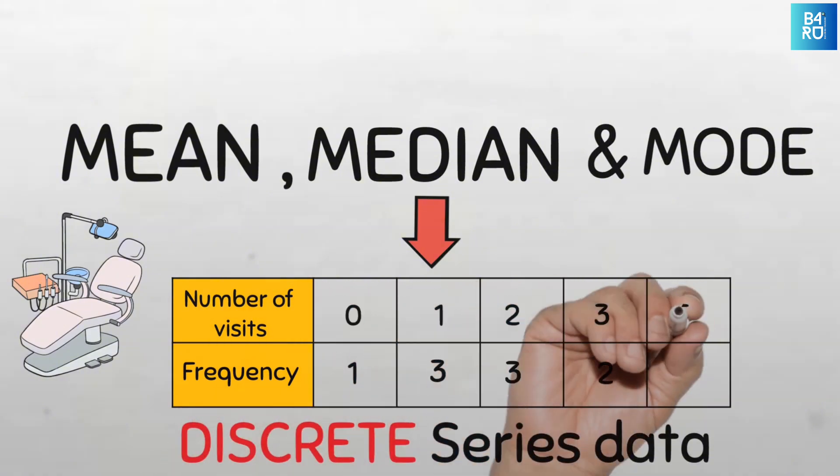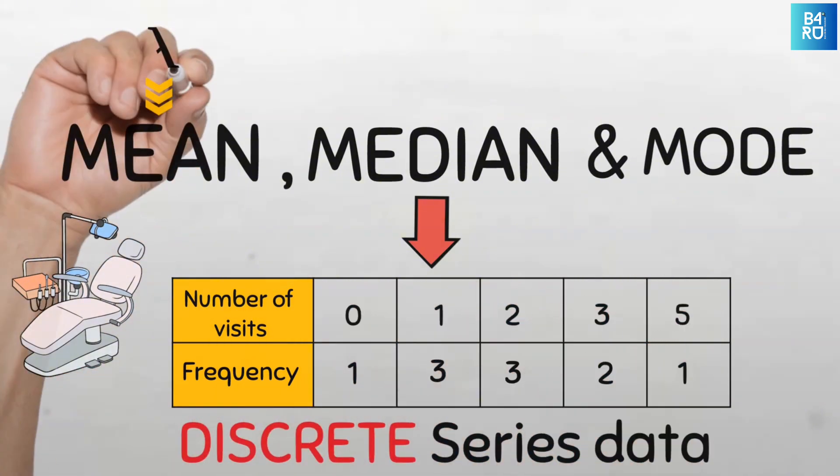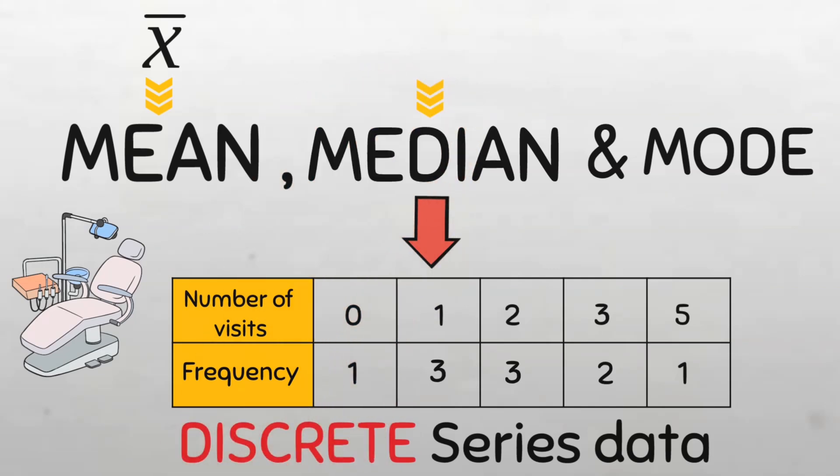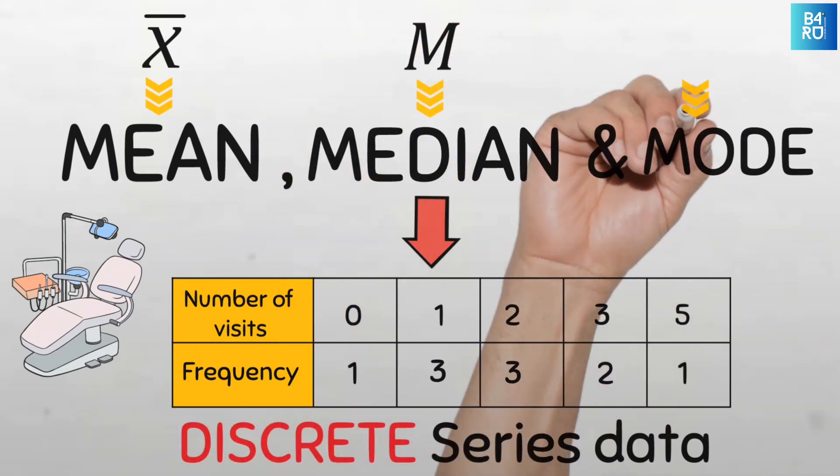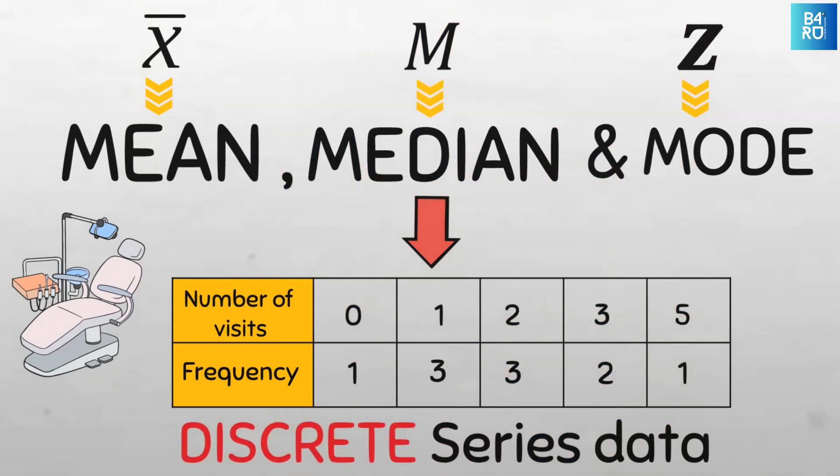We are going to be using common statistical notation. So remember, the mean is usually denoted by X bar, the median by M, while the mode is by the letter Z. I've placed a link above if you want to learn how to compute these same measures for continuous series data. I've also placed timestamps below in case you want to jump to any portion of this video. All right, let's do this.